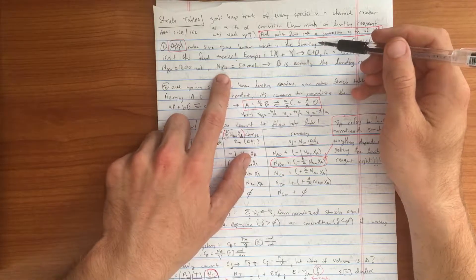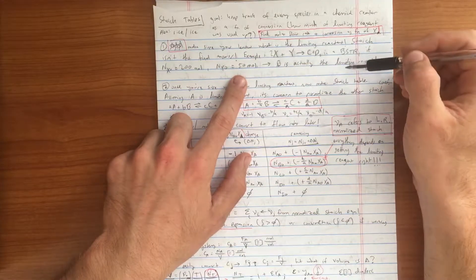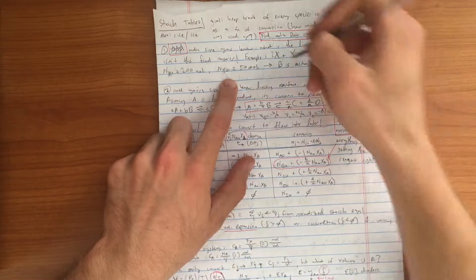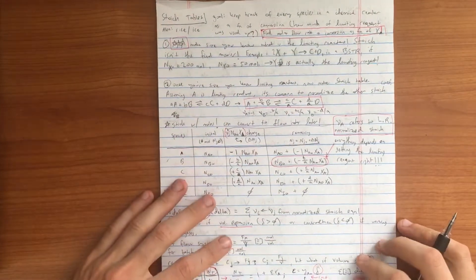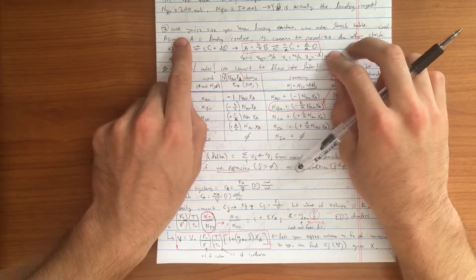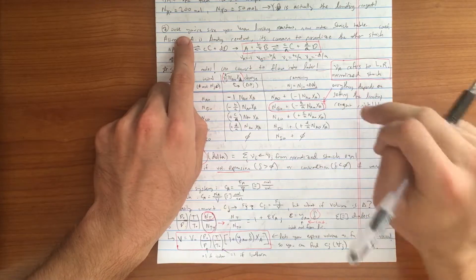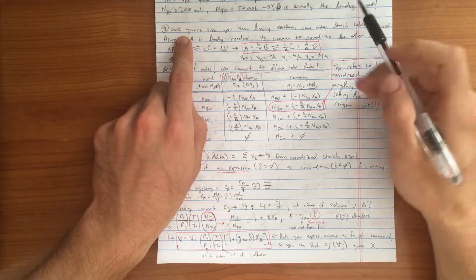In this example, because N Y naught is 50 moles, Y will actually end up being our limiting reagent. Once you are certain that you have discovered your limiting reagent, you've fully read through the question, the next step is to actually start making a stoichiometric table.